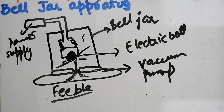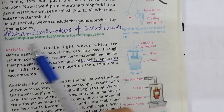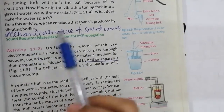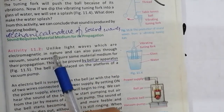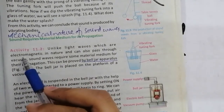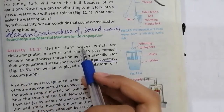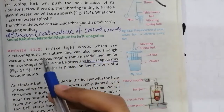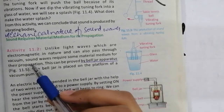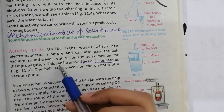From this activity, we conclude that sound requires a material medium for its propagation. This demonstrates the mechanical nature of sound waves. Unlike light waves, which are electromagnetic in nature and can pass through a vacuum, sound waves require some material medium for their propagation.